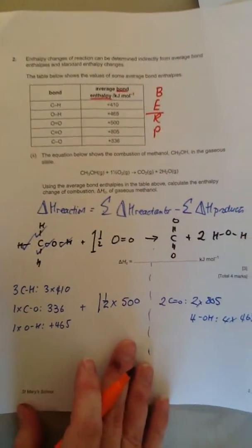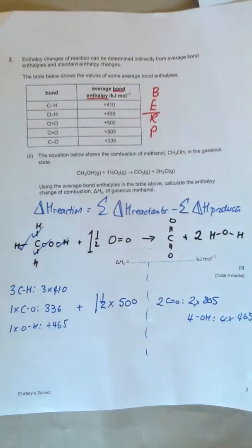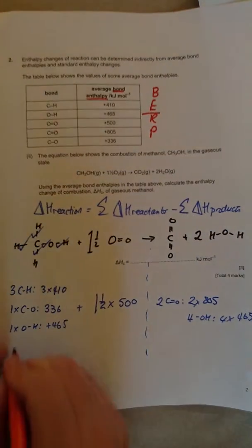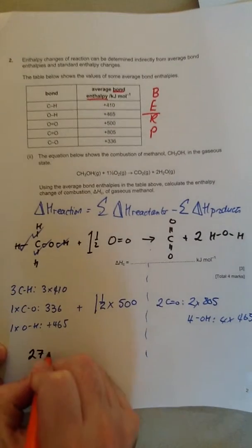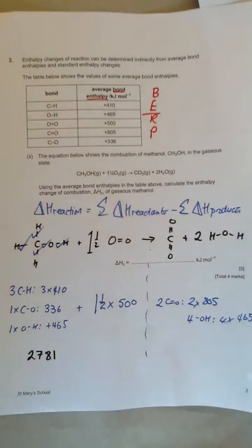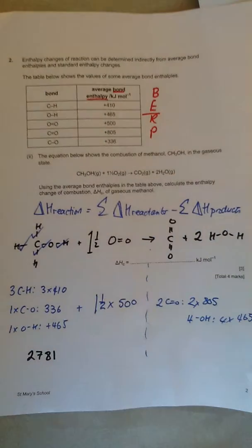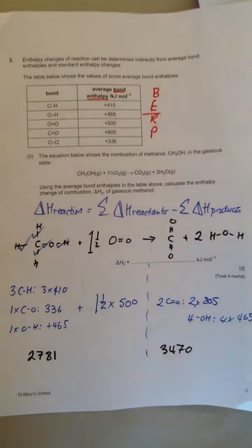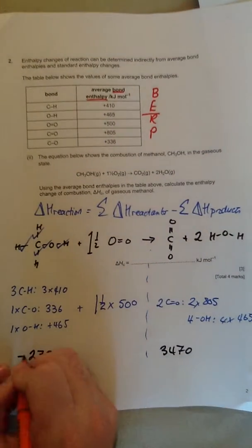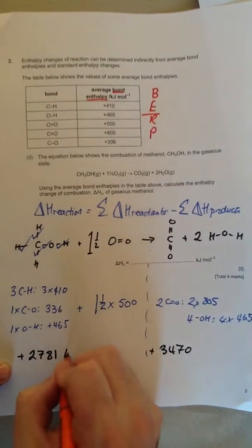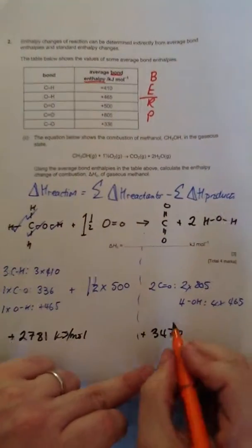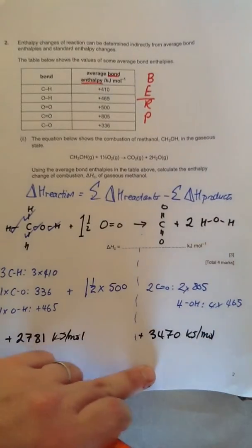So move across a bit. All we now need to do is add up the numbers, and if you use a calculator carefully, that adds up to 2781. Add up the products, you get 3470 kilojoules per mole. These are both positive, kilojoules per mole.